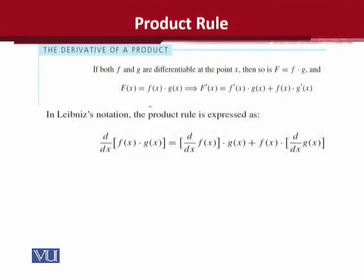You can see that the derivative of a product is mentioned. The assumption is that the functions f and g are the components of which the overall function is made. We will differentiate this at point x, which means we choose the independent variable x. Now, f of x is equal to the product of f and g.